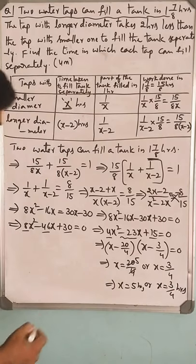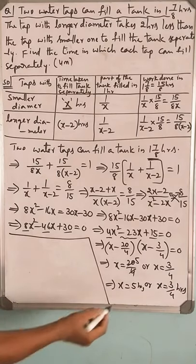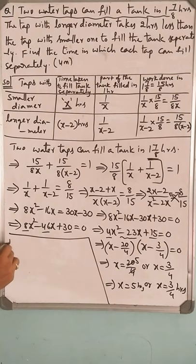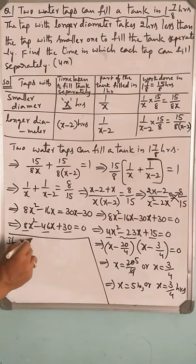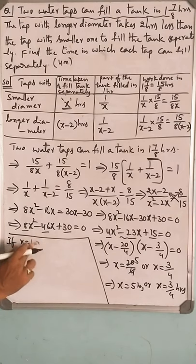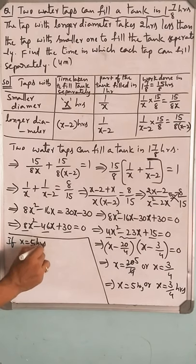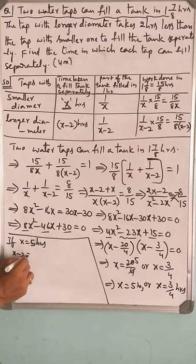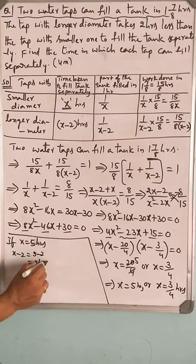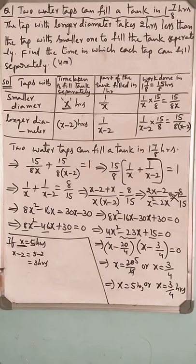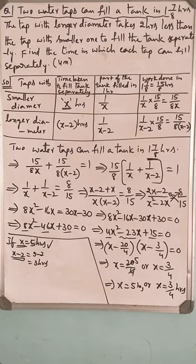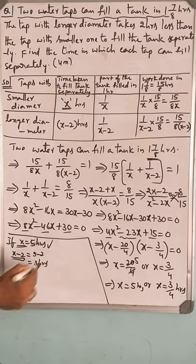You have two cases. If x equals 5 hours, then x minus 2 equals 5 minus 2, which equals 3 hours. This means if the smaller tap takes 5 hours to fill the tank, then the larger tap will take 3 hours to fill the tank.